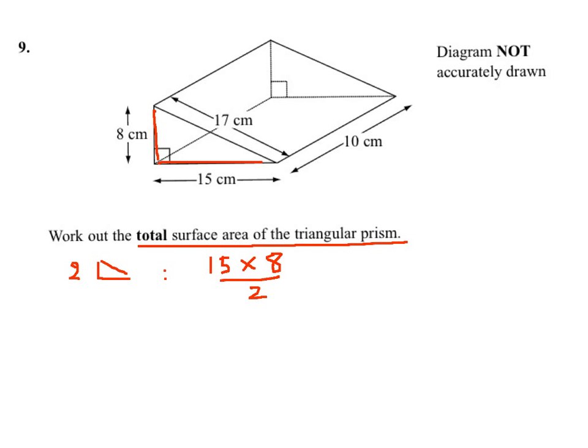one triangle. But because we have two, we have to double it. When you cancel out the twos, you get 15 times 8, which is 120 centimeters squared.